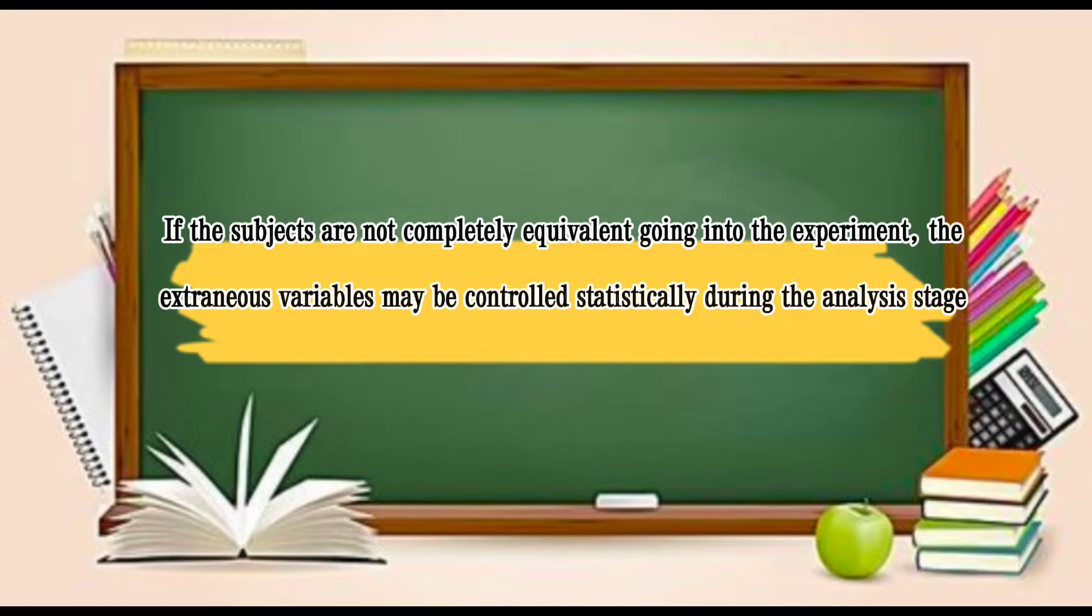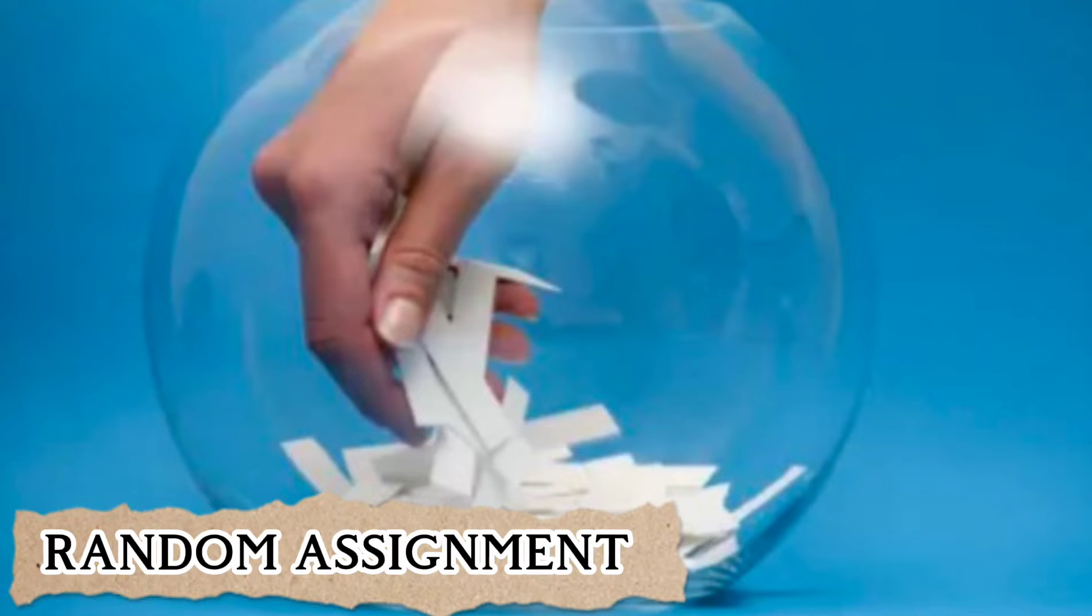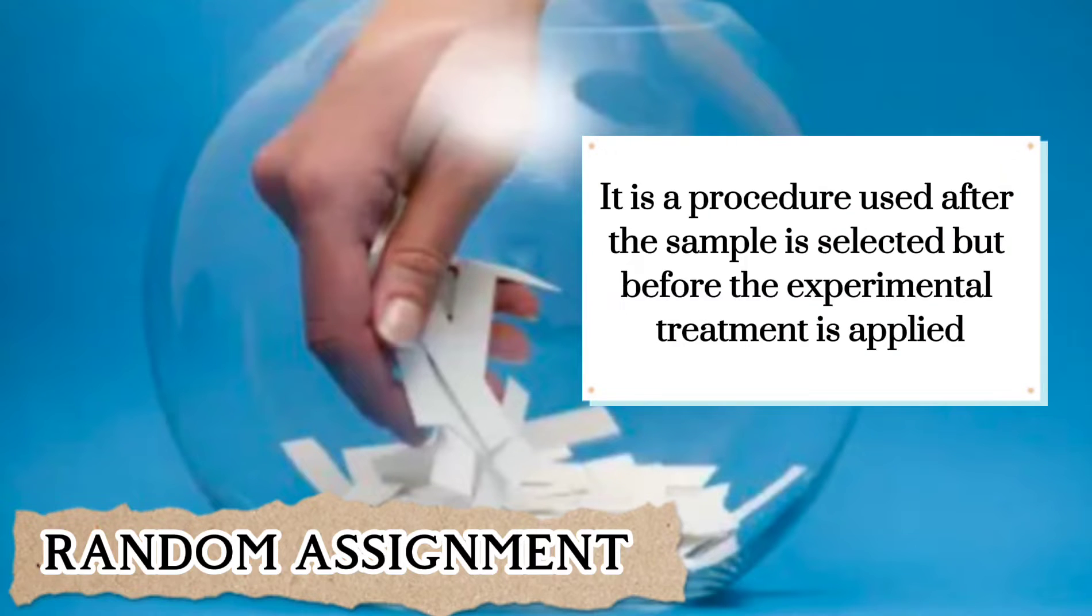However, this approach is less reliable than others, as it is done ex post facto or after the experiment. The third and best technique for equating two or more groups before the experimental treatment begins is referred to as random assignment or randomization. It is a procedure used after the sample is selected, but before the experimental treatment is applied. It involves randomly assigning the subjects in the total sample to experimental and comparison.